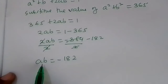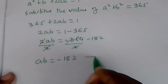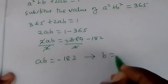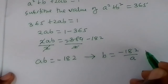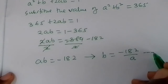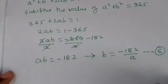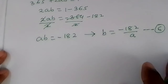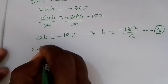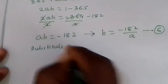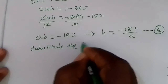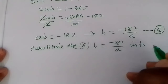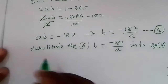So ap equals negative 182. Making p the subject by dividing both sides by a, we get p equals negative 182 over a. We call this equation 6. Now substitute equation 6 into equation 3.